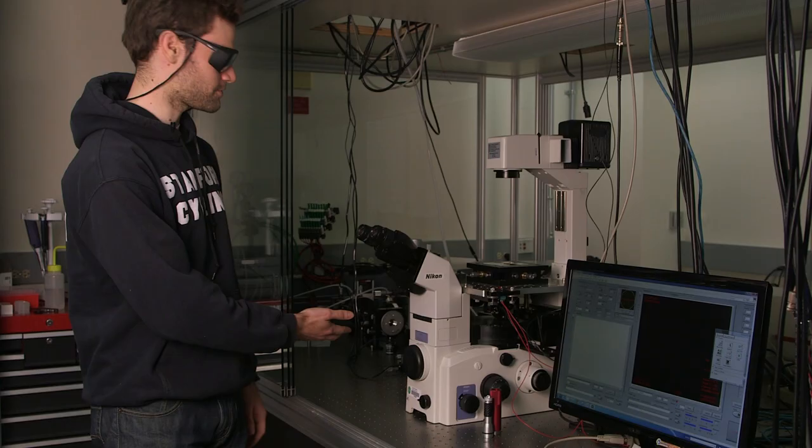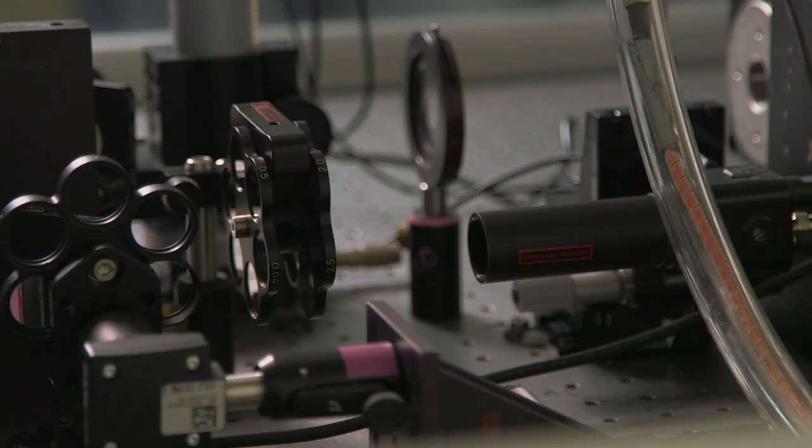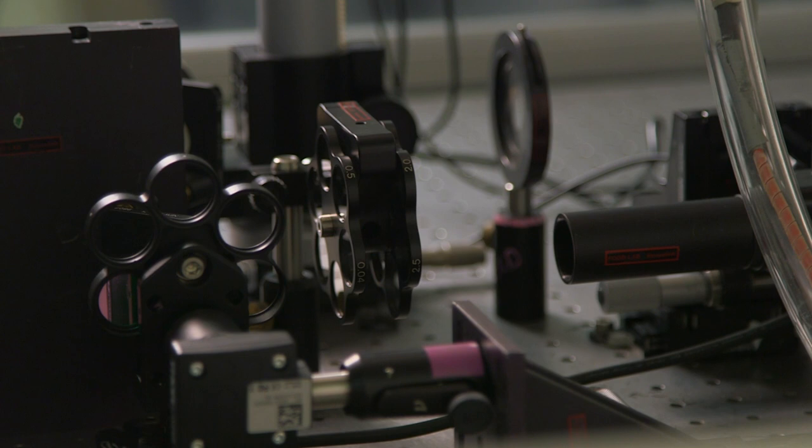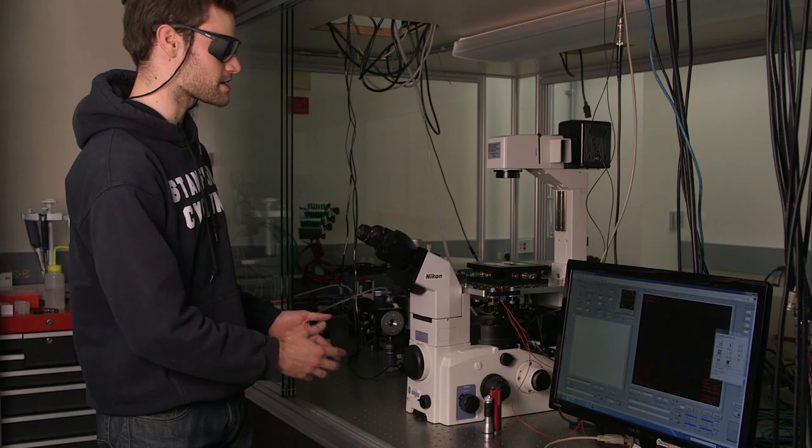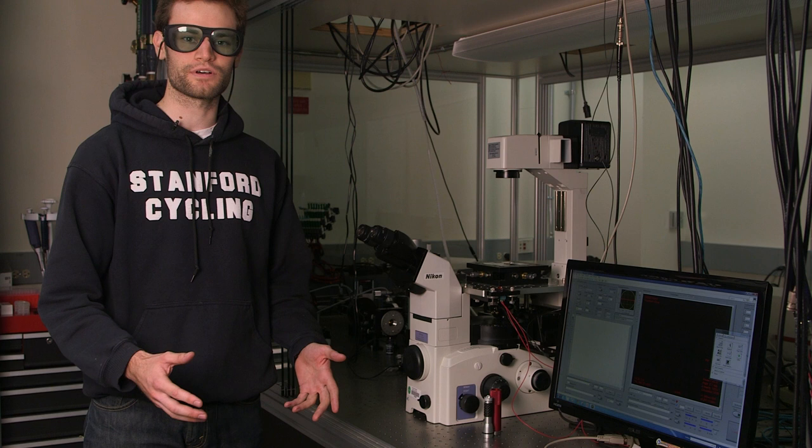This experiment demonstrates the first nano-optical conveyor belt, which uses laser light to drive particles along a metal surface. This experiment was not designed with iLabs in mind. It has a large laser and takes up a lot of space on an optical table, but it can still be automated in the same way as an experiment in a shoebox.